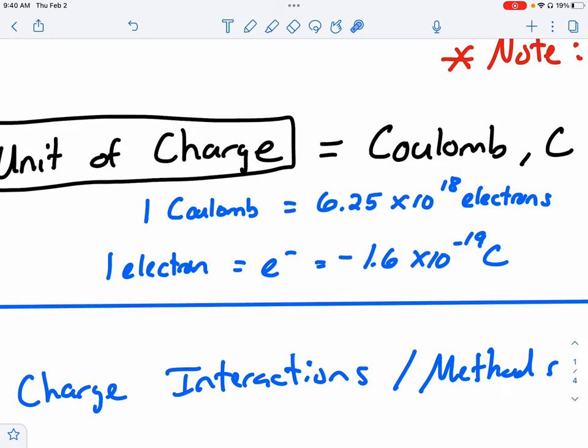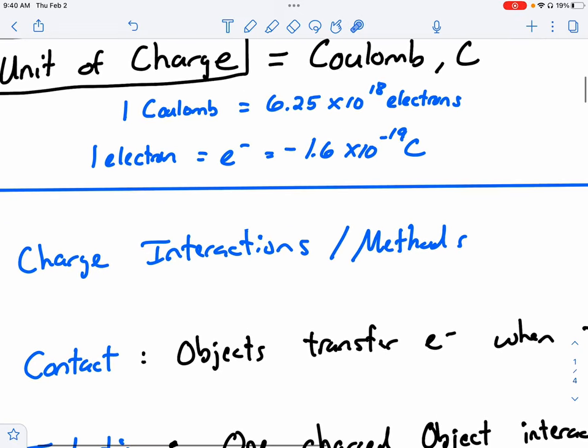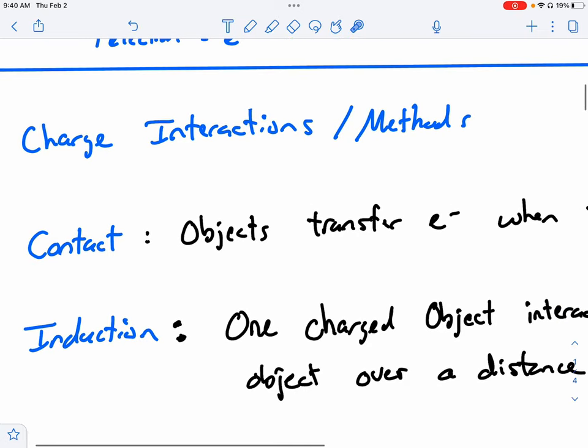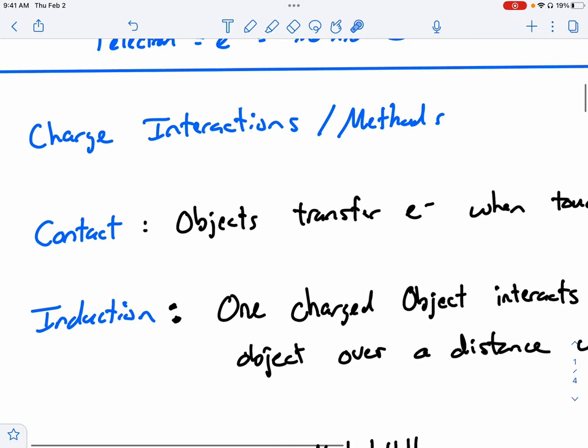What I want to focus on in this video is how charge is transferred. So if we have interactions between objects that have a charge, so they have an imbalance of positive and negative, maybe they've gained electrons and they're more negative. Maybe they've lost electrons and they're more positive. However that ends up,